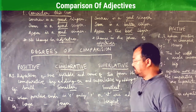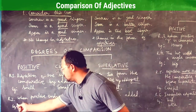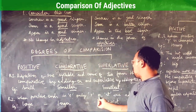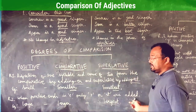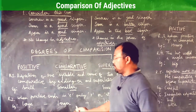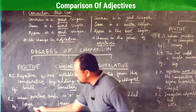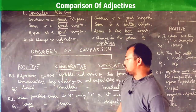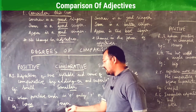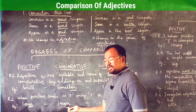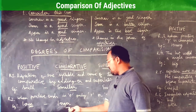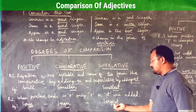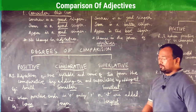Rule number two: when a positive degree adjective ends in -e, only -r or -st are added. For example, the word 'large' ends with -e, so in the comparative degree you add -r, giving larger, and in the superlative degree you add -st, giving largest. Large, larger, largest.